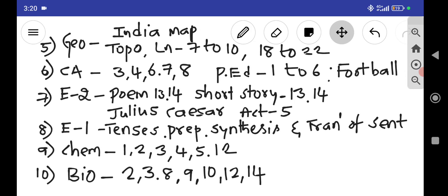Next, for geography, computer application, or physical education, then English paper 2 and 1, chemistry and biology we have given. In chemistry first 50 you have written the other topics. Now you are having chapters 1, 2, 3, 4, 5, and 12.